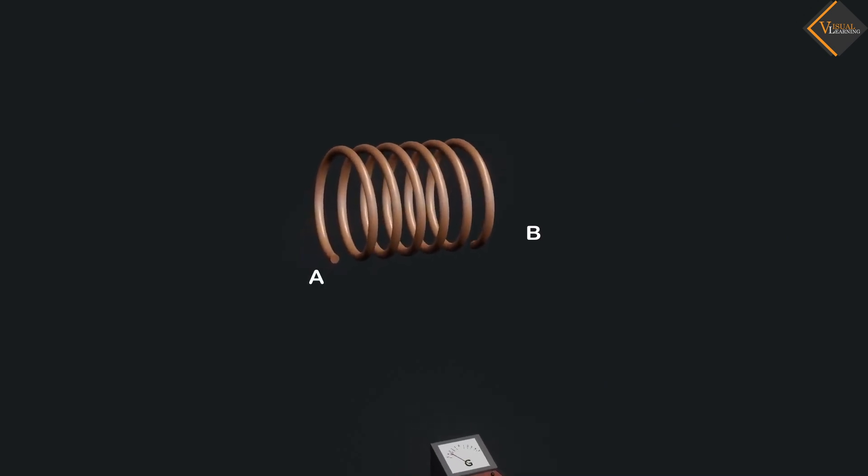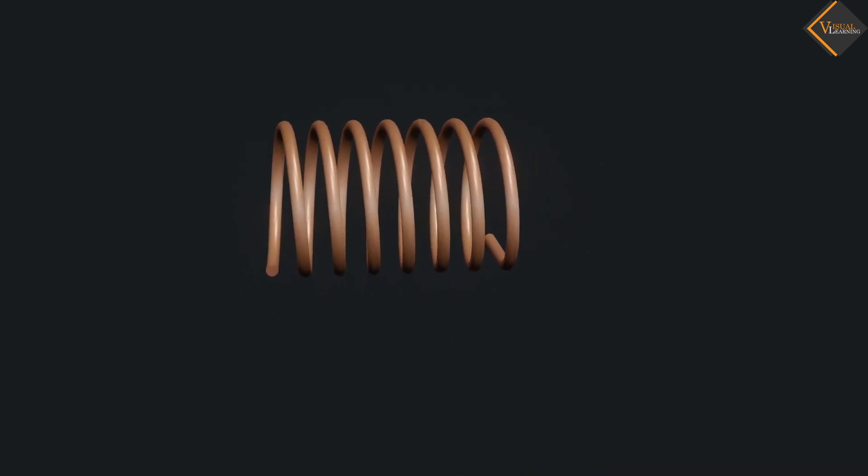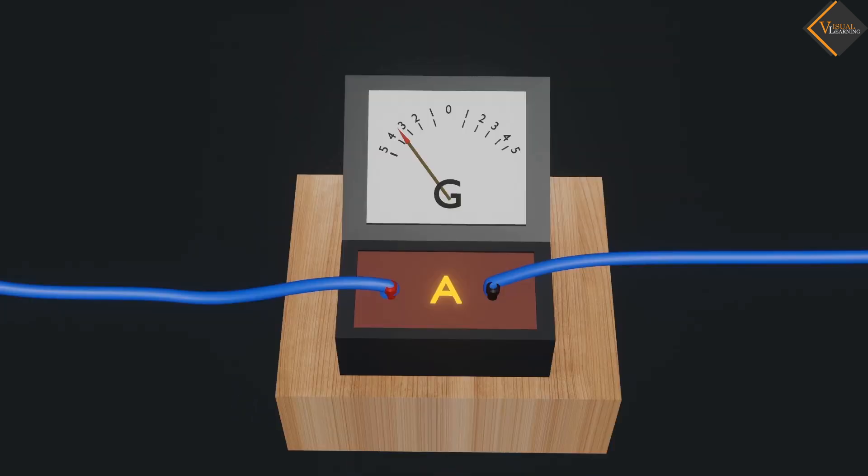Consider a metallic coil AB having a large number of turns. The ends of this coil is connected to a galvanometer.